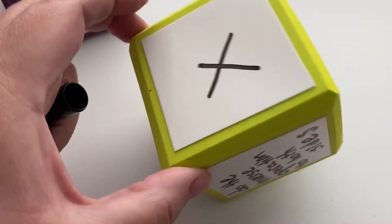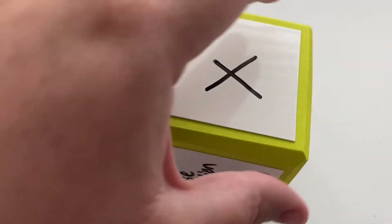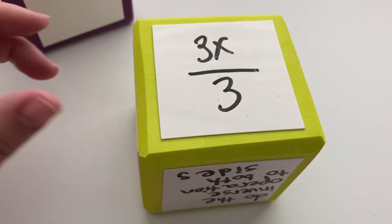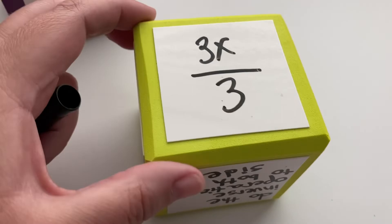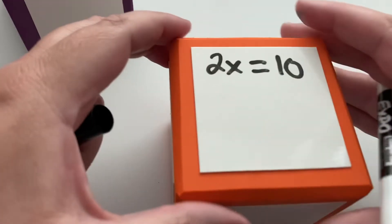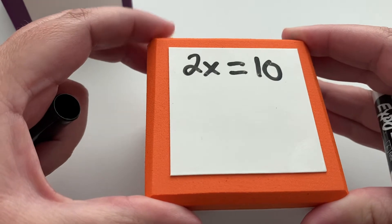Okay. So we're just going to focus on multiplying, so the inverse operation we're going to be doing today is dividing. Let's look at a problem. Here we have one: 2x equals 10.